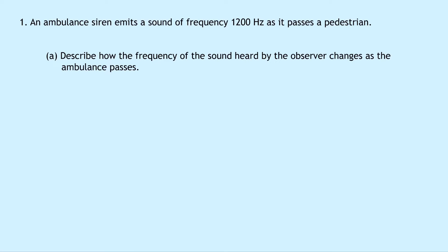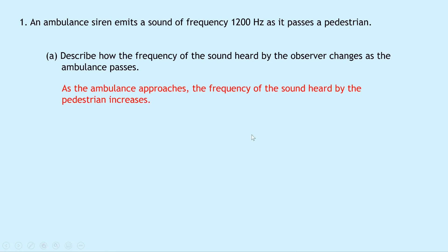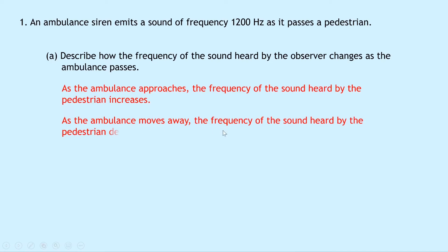We're going to split this answer into two parts, where we consider the ambulance approaching the pedestrian, and then the ambulance moving away from the pedestrian. As the ambulance approaches, the frequency of the sound heard by the pedestrian increases. Whereas as the ambulance moves away, the frequency of the sound heard by the pedestrian decreases. So another way of thinking about that is you'll hear an increase in pitch when the ambulance approaches, and then a decrease in pitch when the ambulance is moving away from you.